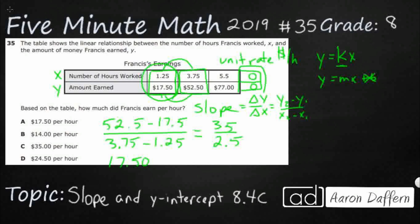It's going to be this 0 that I know is there. Minus 0, which is just $17.50. 1.25 minus 0, which is just 1.25. So I would just get 17.5 over 1.25. You can do that when you know it goes to the origin, it's proportional.